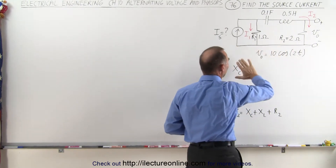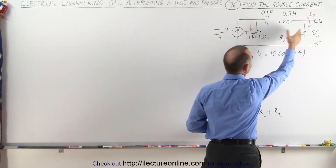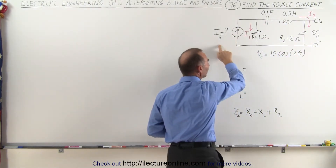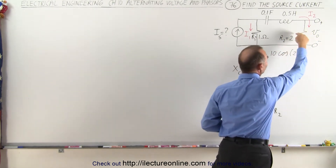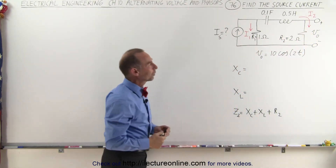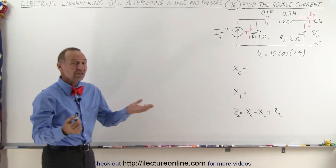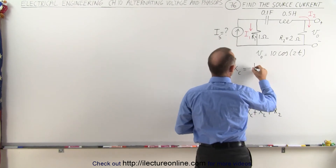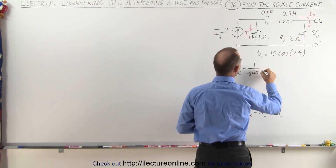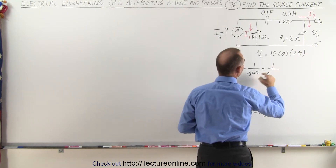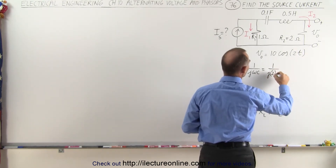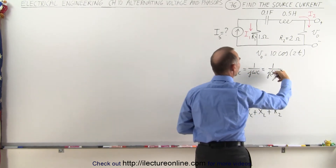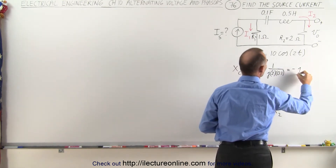Once we have the impedance in this branch right here, we can find the current in this branch based upon the presumed input current being I sub s, and then we use Ohm's law to find the current and voltage relationship across that resistor. So let's start out with finding Xc. Xc is equal to 1 over jωC. That would be 1 over j times 2 times 0.1, which gives us 0.2. Bringing that to the numerator, we get minus j5.